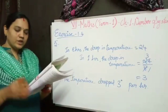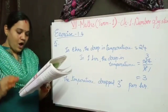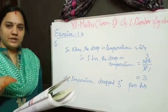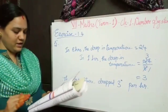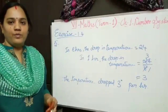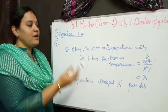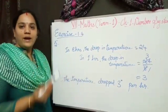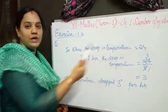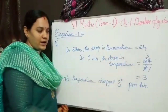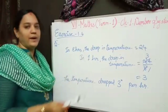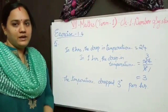Fifth problem: in 8 hours duration, with uniform decrease in temperature, the temperature dropped 24 degrees. How many degrees did the temperature drop each hour? We divide 24 by 8. 3 eights are 24, so my answer is 3. The temperature dropped 3 degrees per hour.